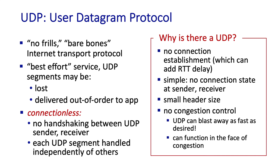Given how simple UDP is, one might ask why UDP exists at all. There are actually good reasons. First, there's no connection establishment delay — the time between when a sender wants to talk to a receiver and when data can actually flow. There is no connection state shared between sender and receiver, so UDP headers are relatively simple with little overhead. Most importantly, UDP does not provide congestion control, meaning a UDP sender can blast away as fast as it desires and can still function even when the network is congested.